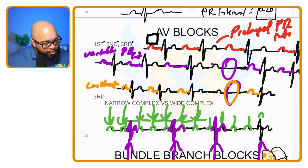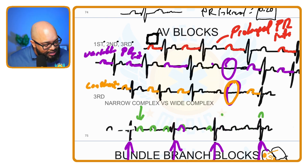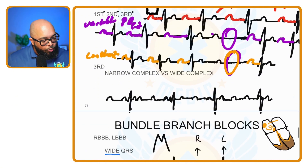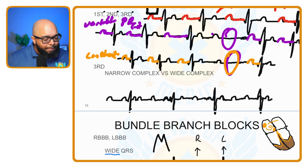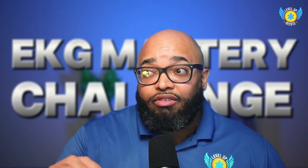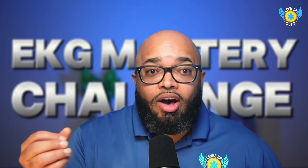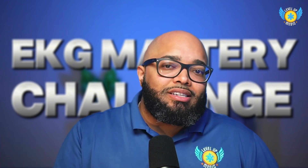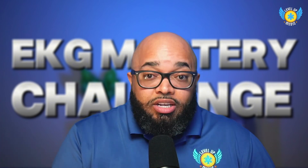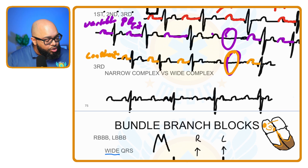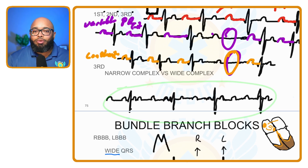The other thing you'll notice in a third degree AV block is that the overall rhythm is very slow — a significantly bradycardic heart rate, often in the 20s, 30s, sometimes 40s. If no signal is getting through, the heart rate has no choice but to slow down because the heart must be paced to maintain a heart rate.